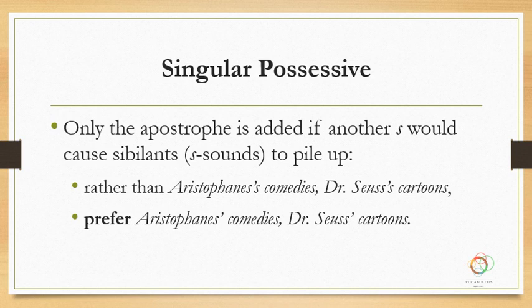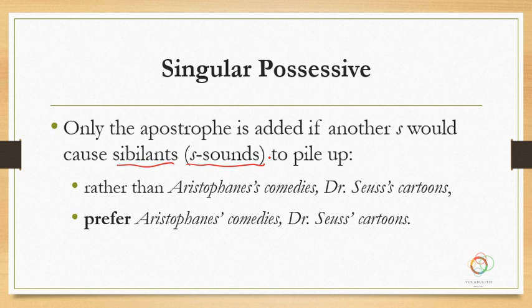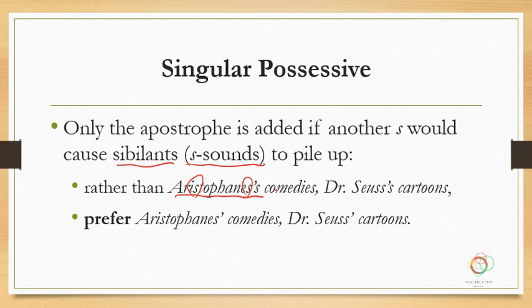Only the apostrophe is added if another S would cause sibilance to pile up. Sibilance refers to S sounds, and sometimes names already have too many S sounds. If it already has two S sounds and you want to add a third, that would be sibilance piling up and we don't want that. So instead of saying Aristophanes's comedies, which is kind of hard to say — it's already got too many syllables and two S sounds, and now you're going to add a third — we prefer to say Aristophanes' comedies, with just the apostrophe.